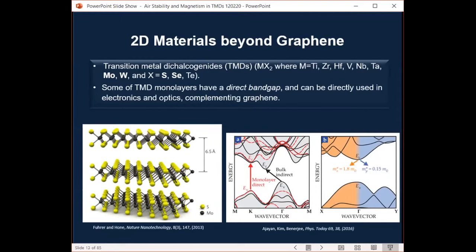And 2D materials are comprised of layered van der Waals solids, including hexagonal boron nitride, phosphorene, MXene, and silicene, and transition metal dichalcogenides, TMDs. Unlike graphene, which is a gapless semi-metal, some TMD monolayers have a direct band gap. This means that they can directly be used in electronics and optics, complementing graphene.